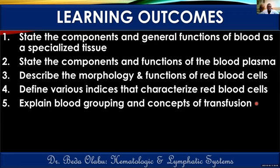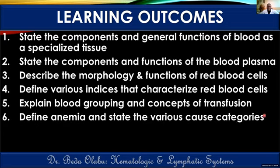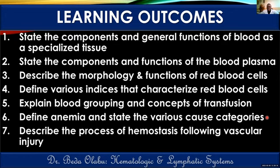We will understand why person A cannot receive blood from person B. We will also look at an important clinical aspect of red blood cells — anemia — defining it and stating its major causes. Lastly, we will describe hemostasis, which is basically the mechanism that prevents blood loss.